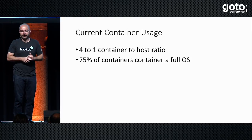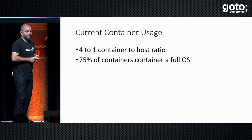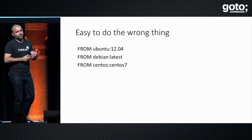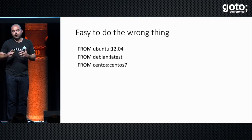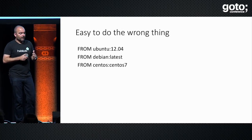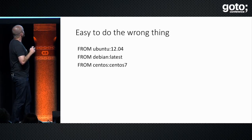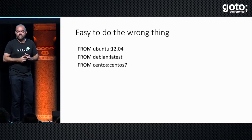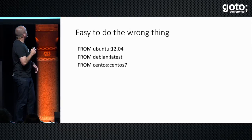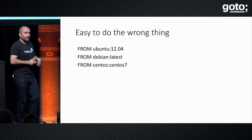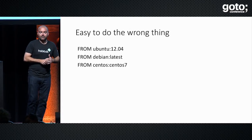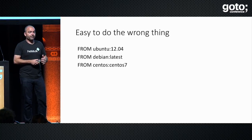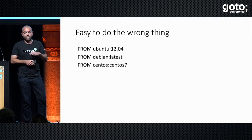From those two statistics, we can guess: we're treating containers like VMs. There's no need to put a full operating system inside a container. All you need to do is package up your application. But the problem is it's very easy to do the wrong thing, especially with the patterns in Docker files that let you easily pull in practically a full operating system.